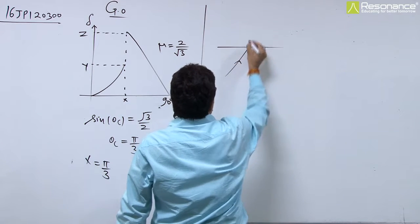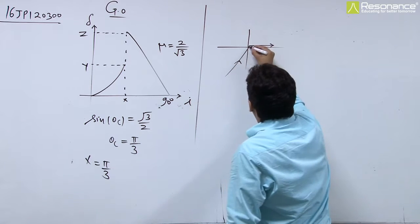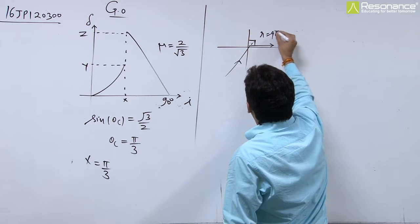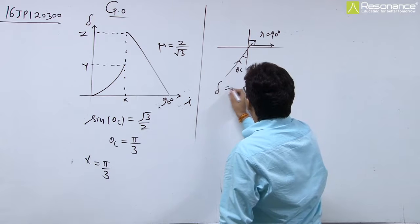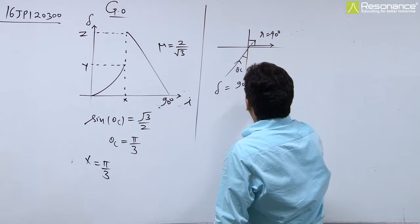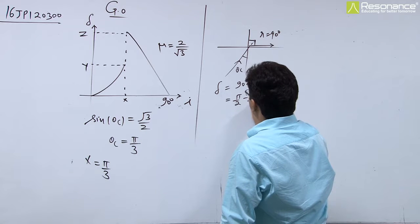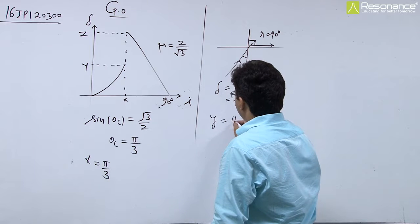When light ray goes from denser medium to rarer medium and TIR takes place, in that case R equals 90 and this is theta c. So deviation is 90 minus theta c, means pi by 2 minus theta c. Theta c is pi by 3, this is pi by 6, means y equals pi by 6.